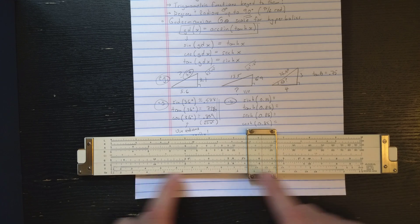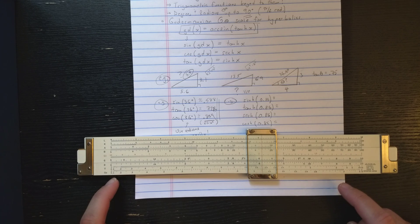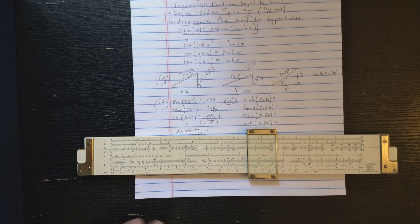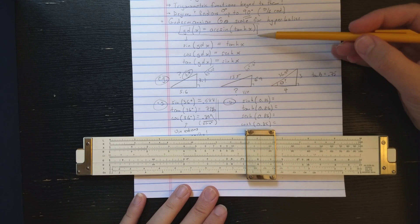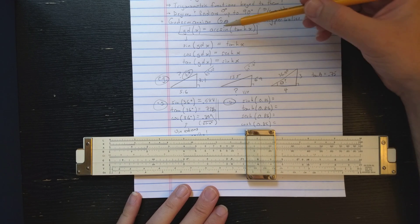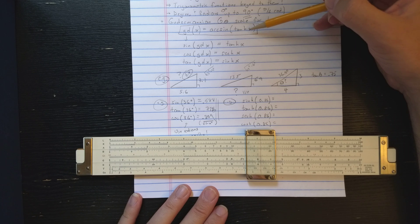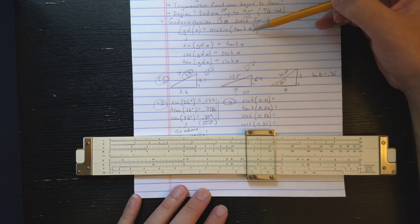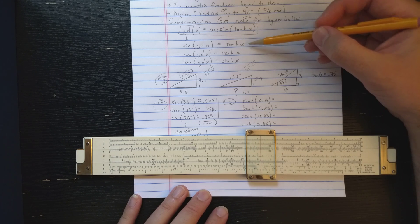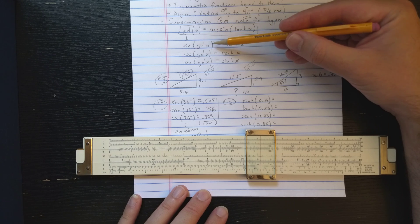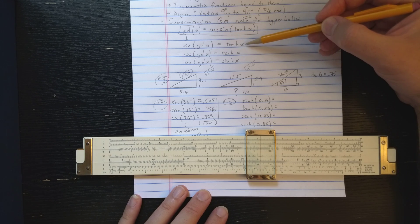So you add one scale to the mix and somehow you're able to compute the hyperbolic functions. And the real secret is this Gudermanian function which could be defined as the arcsine of tanh of x. So one obvious fact then is that the sine of the Gudermanian function is tanh x.